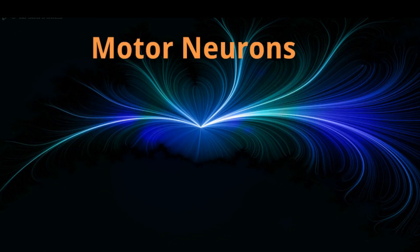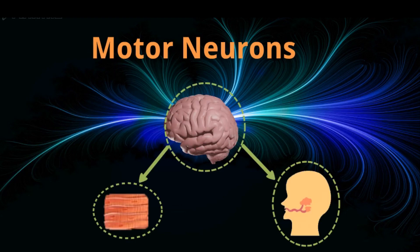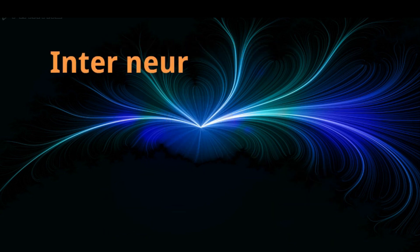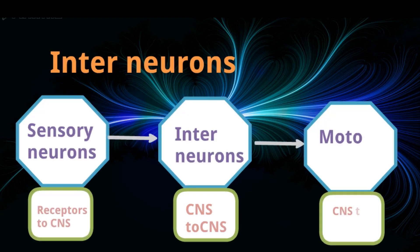Motor neurons carry nerve impulses from the central nervous system to effectors, muscles and glands, that is the parts which respond. Interneurons are present in the central nervous system. They form a link between sensory and motor neurons.